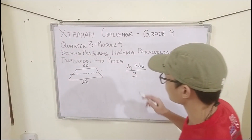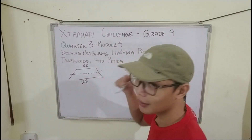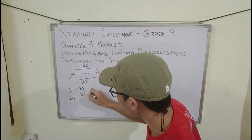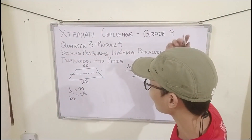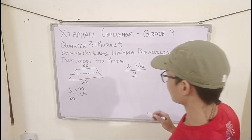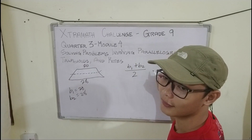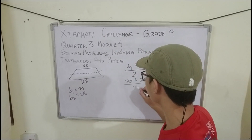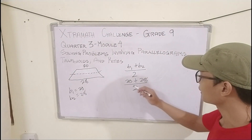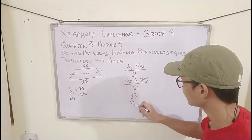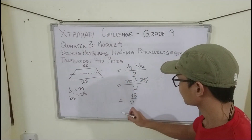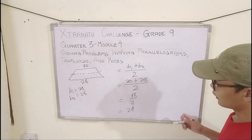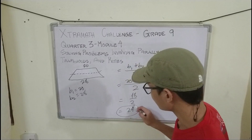We need to identify base 1 and base 2. Base 1 is 20 and base 2 is 28. Substituting into the formula: (20 + 28) / 2 = 48 / 2 = 24. So the length of our mid-segment is 24.